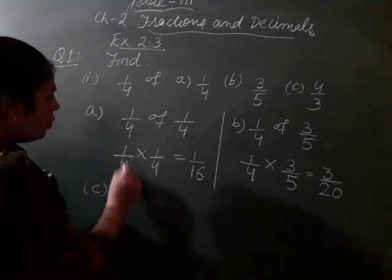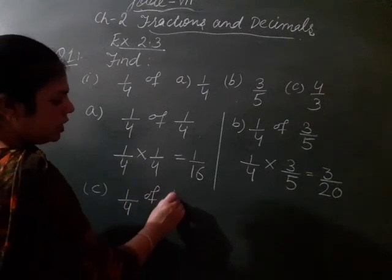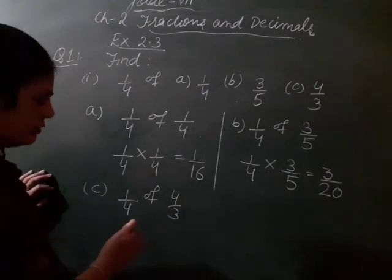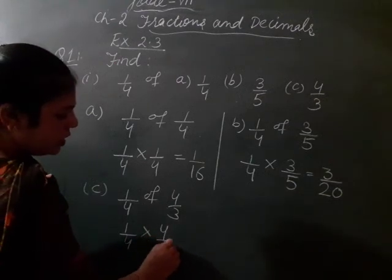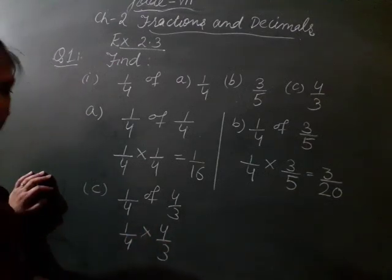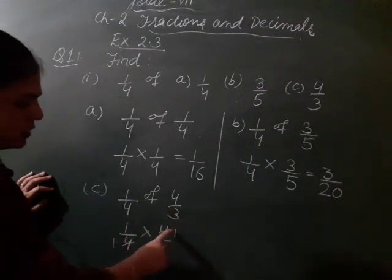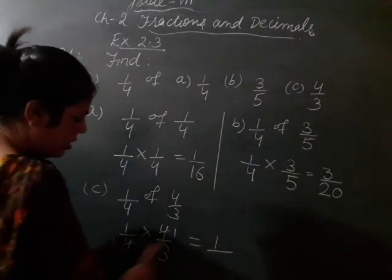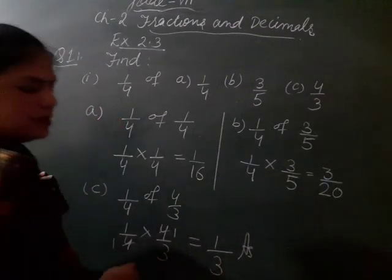Now C part: you have to find out 1 by 4 of 4 by 3. Of means you have to multiply: 4 by 3. Now numerator-denominator cancel pe aate hain: 4 ones are 4, 4 ones are 4. So 1 times 1 is 1, 1 times 3 is 3.